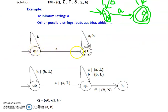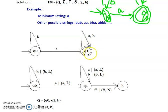In the DFA: from Q0, reading A moves to final state Q1 — so the minimum string is A. A string can start with any number of B's and then read an A to reach Q1. Once at Q1, the minimum condition of at least one A is satisfied, and any number of A's and B's in any order can be accommodated via the self-loop.